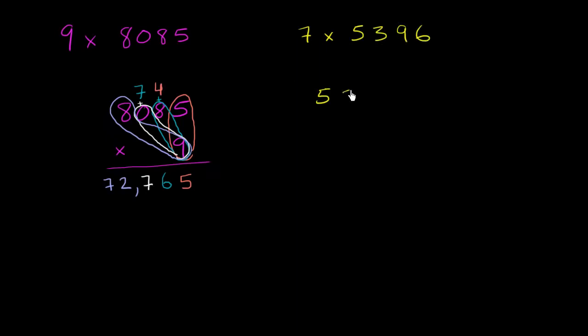I'm going to rewrite it: 5,396 times 7. First, we'll think about what 7 times 6 is. We know that's 42. Put the 2 in the ones place and carry the 4.